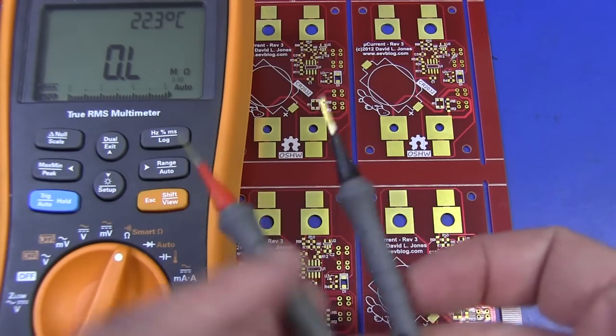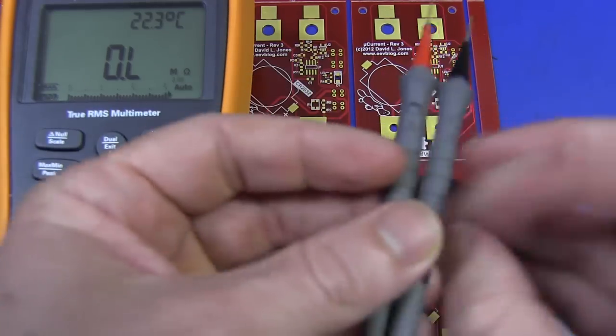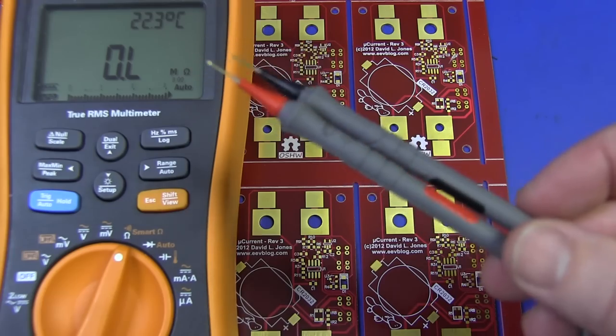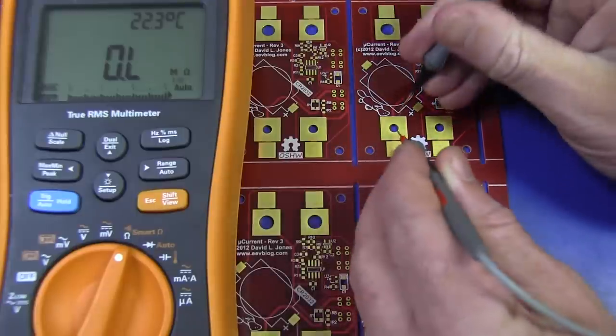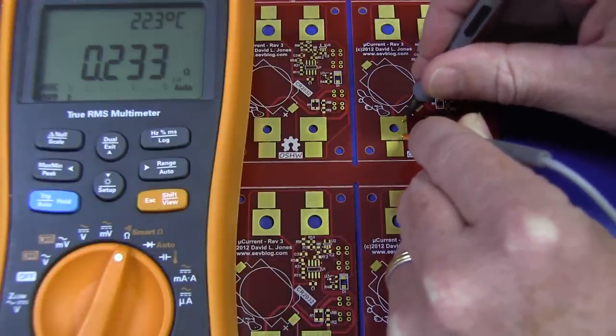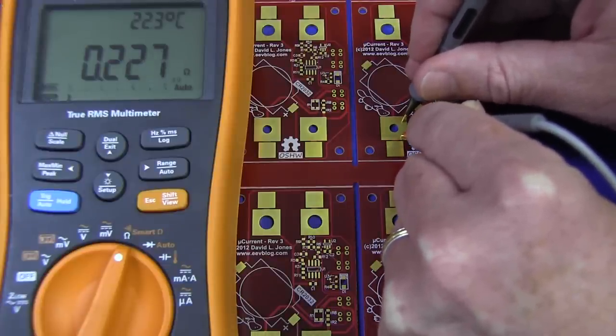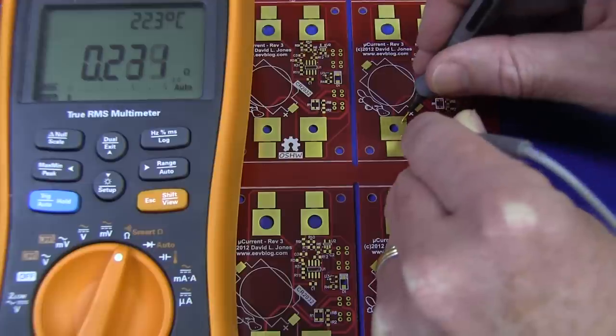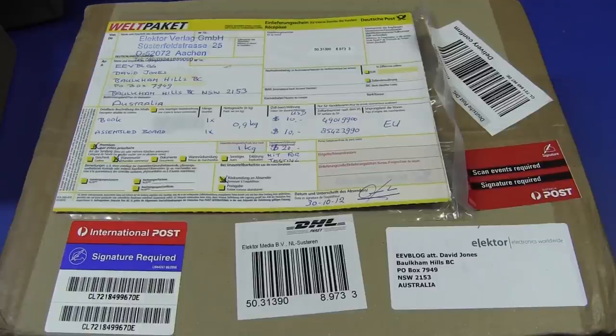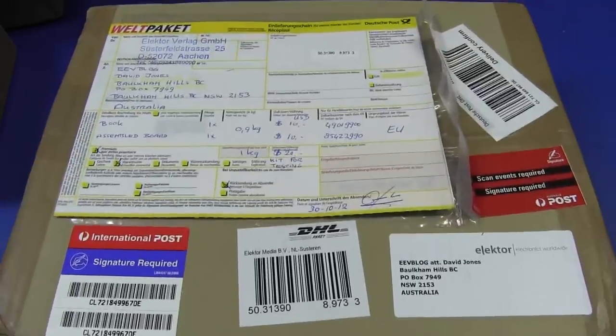All right, let's just check the contact resistance repeatability of these pogo pin tips here. So let's probe this gold pad here, 0.238. And I'm moving those pogo pins up and down. So they're only, as I move those pogo pins up and down, it's only varying by a couple of milli-ohms there. Not much at all. That's very nice. I like it.